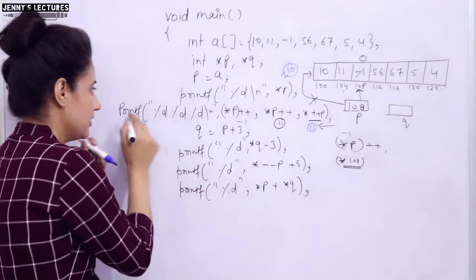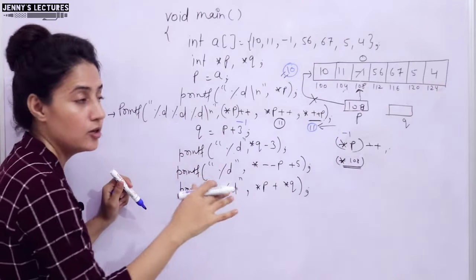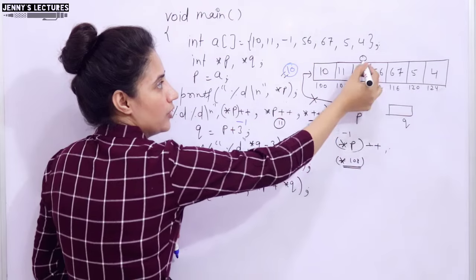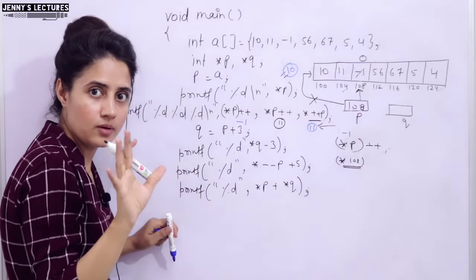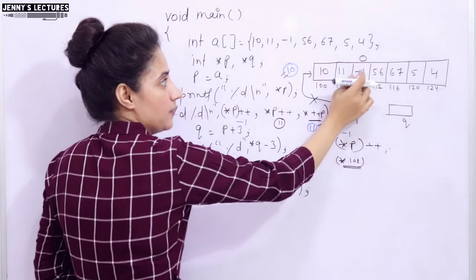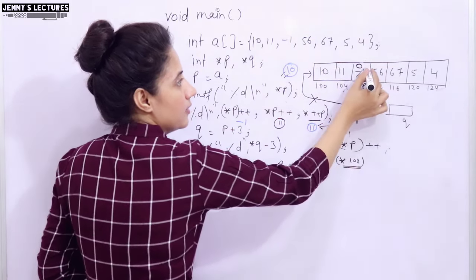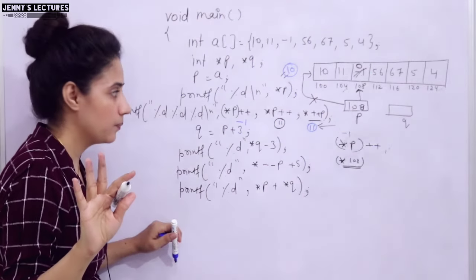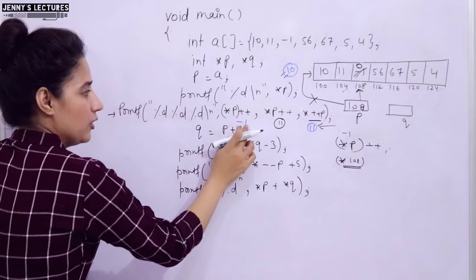After this line, if you print *P, P is still pointing to 108 and the value at 108 is now 0 — we no longer have -1 there. We have 0 at the place of -1 in the array. But the expression itself returned -1.